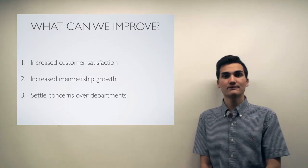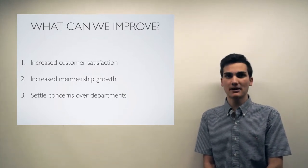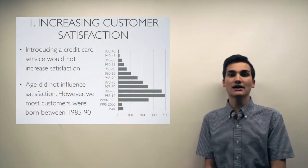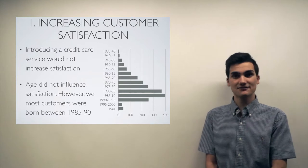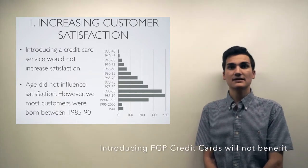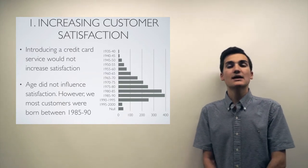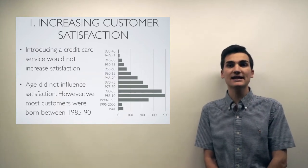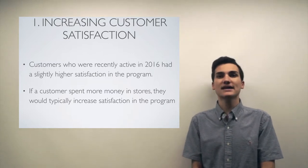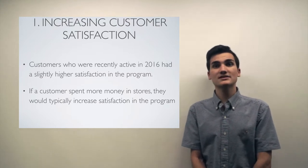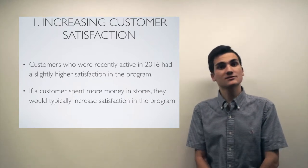To resolve these issues, we see three key areas that need improvement: first, increase customer satisfaction; second, increase membership growth; and third, settle concerns over departments. To increase customer satisfaction, we conducted market research. We noticed many other programs offered credit cards, so we ran a regression — unfortunately FGP would not benefit from this. Age did not influence satisfaction either. However, by segmenting members into age brackets, we noticed most customers were born between 1985 and 1990. Customers who were recently active in 2016 had slightly higher satisfaction, and those who spent more money in stores typically had higher satisfaction.